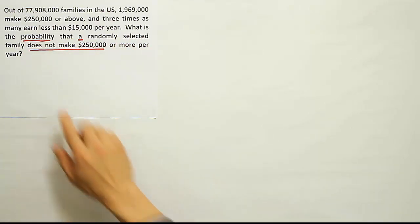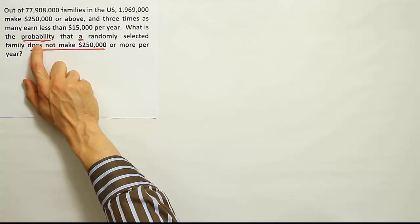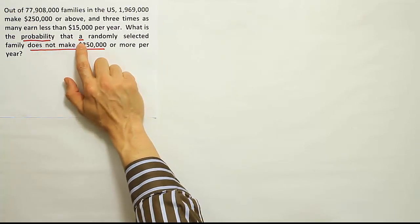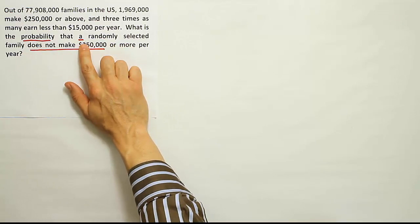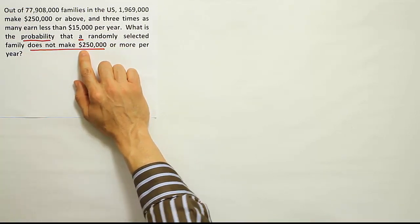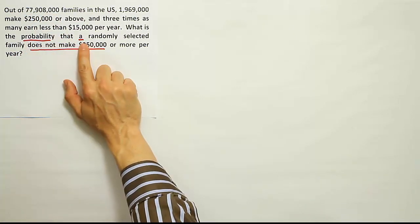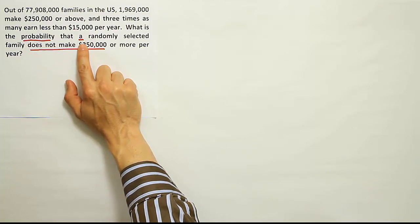I've underlined some key phrases in the problem. The first one is the word 'probability' — it tells me I'm working a probability problem. The next subtle one is this idea that they're taking a randomly selected family, just one family. If they're only selecting one family, it's just one event — the event of choosing a family among the 77,908,000 families in the U.S. If it's just one simple event, it's very possible we can solve the problem with one fraction using basic probability.